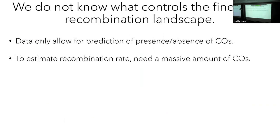We just don't know much about the fine-scale recombination landscape. I'm interested in understanding at a really fine resolution what's happening with recombination, and the purpose of this is to help inform breeding processes downstream. If we know what's happening on a fine scale, that can be used to improve things that rely upon recombination, like QTL mapping and general breeding programs. However, the crossover data we have right now only allows us to do presence-absence predictions of crossovers. To actually estimate recombination rate, we need a really large amount of crossovers, which requires large experimental populations — and that's not always feasible.